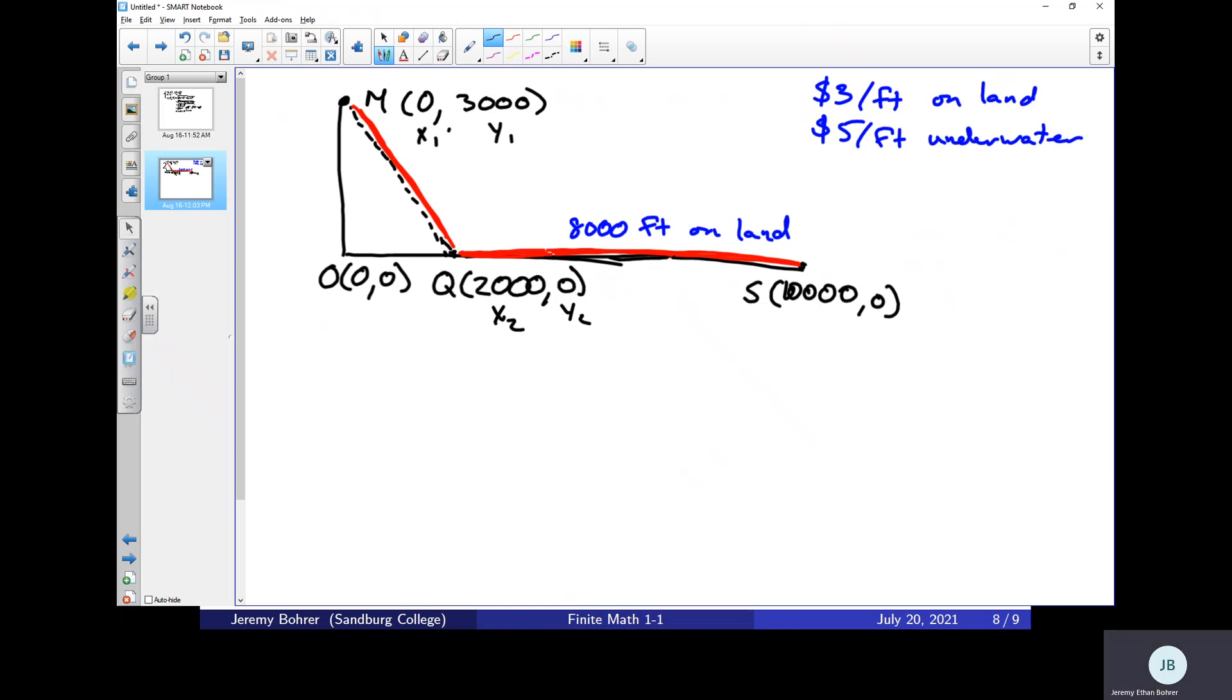Then here's what we get. Distance is equal to the square root of (2000 - 0)² plus (0 - 3000)², which is just the square root of 2000² plus (-3000)².